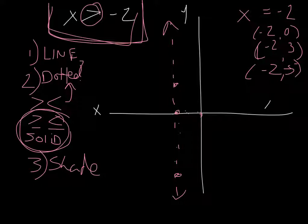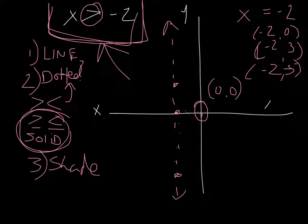Like I always choose the origin if I can. Pick the origin, 0, 0. Plug it into the equation up here. If it works, then you'll shade this side of it. If it doesn't work, you shade the other side of it. Alright?